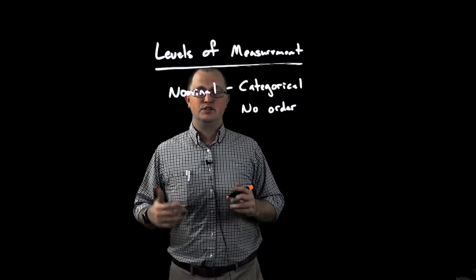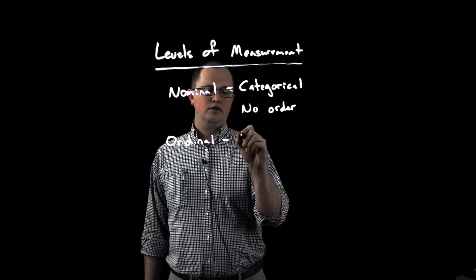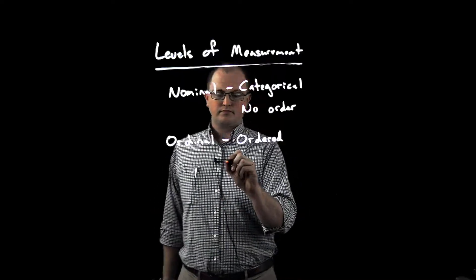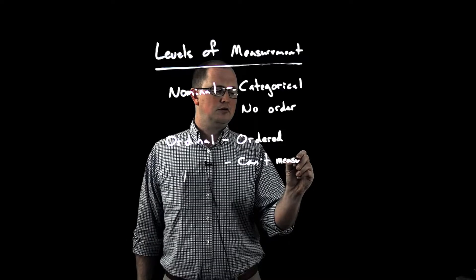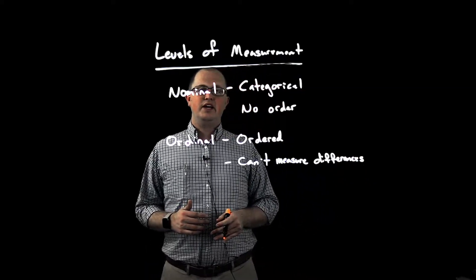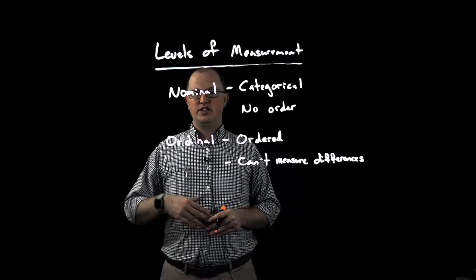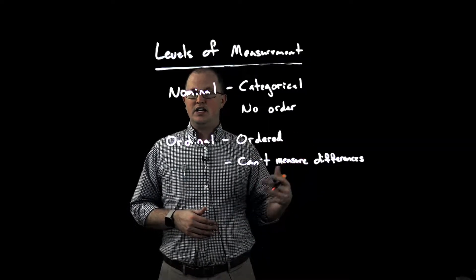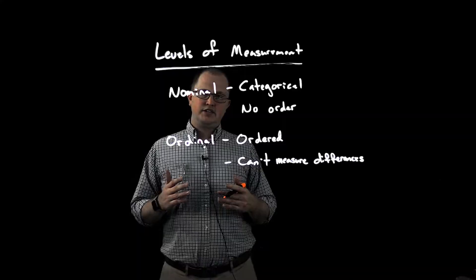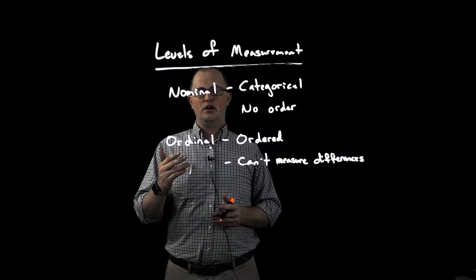So similar to nominal is ordinal. Ordinal is data which can be ordered, but we don't have a way of measuring the differences in the order. Some examples of this could be if we ask people how satisfied they were after they had dinner at a particular restaurant. They could say not satisfied, somewhat satisfied, or satisfied. And we can put those in order from least to greatest in terms of how much satisfaction they had. But measuring exactly how much satisfaction we increased going from not satisfied to somewhat satisfied is not possible. This is an example of ordinal.